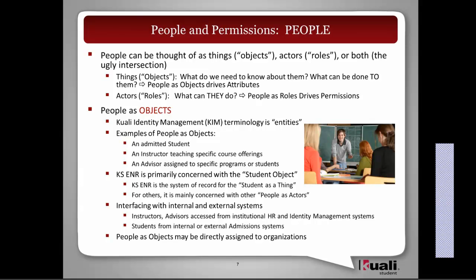In QALY student enrollment, we're primarily concerned with the student object — that's our largest group of things. We treat the enrollment system as the system of record for the student as a thing or object. For others, we are mainly concerned with other people as actors. These actors and objects will be created and derived usually from external and internal systems at the university.